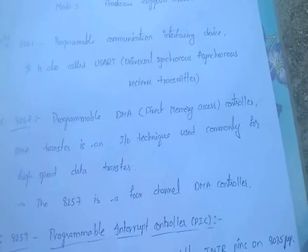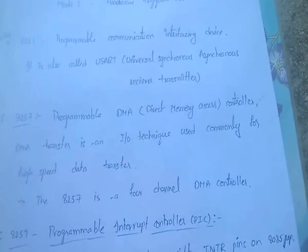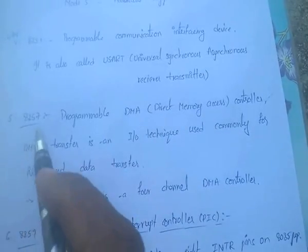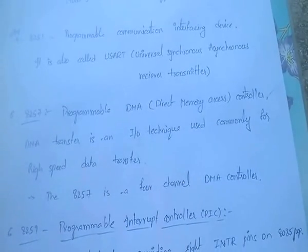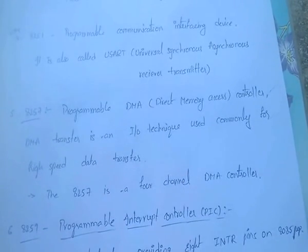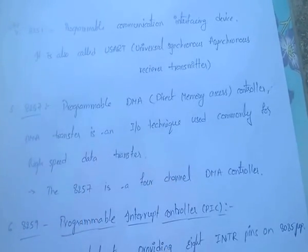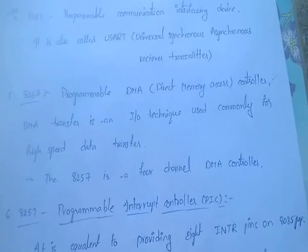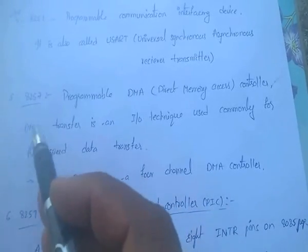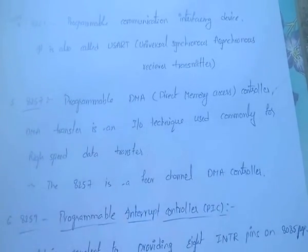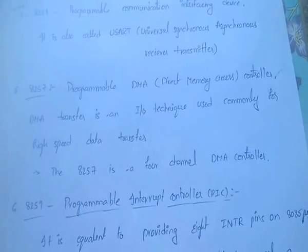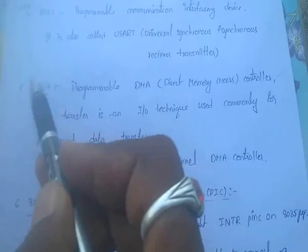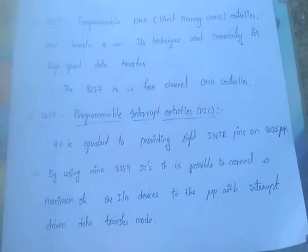8257 is a programmable DMA controller. DMA is nothing but Direct Memory Access. DMA transfer is an input output technique used commonly for high speed data transfer. The 8257 is a 4-channel DMA controller.